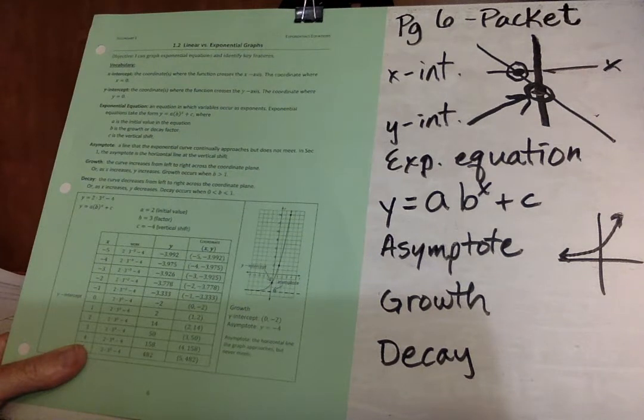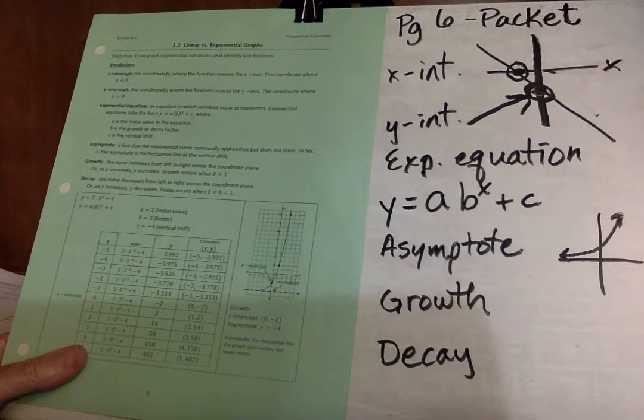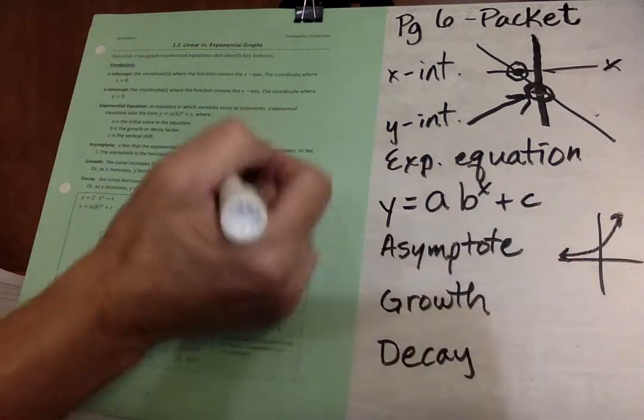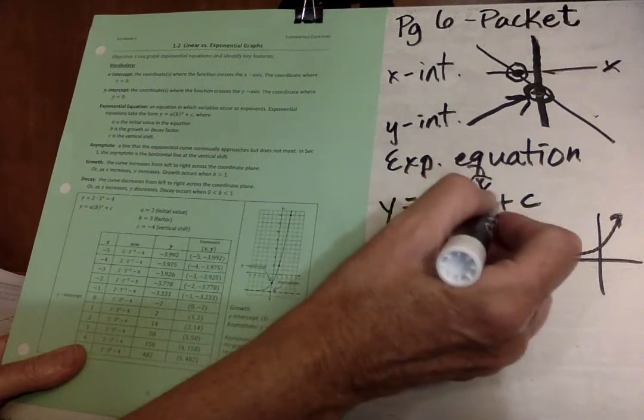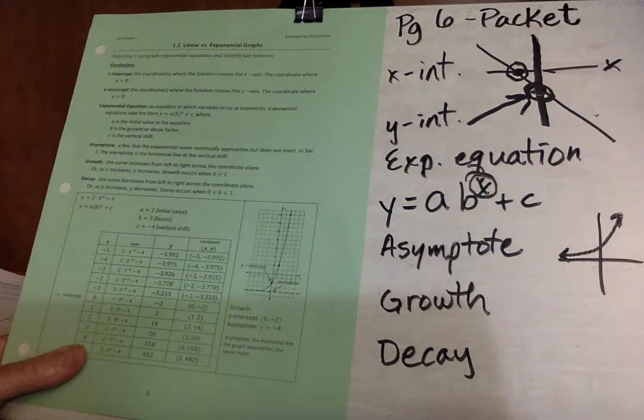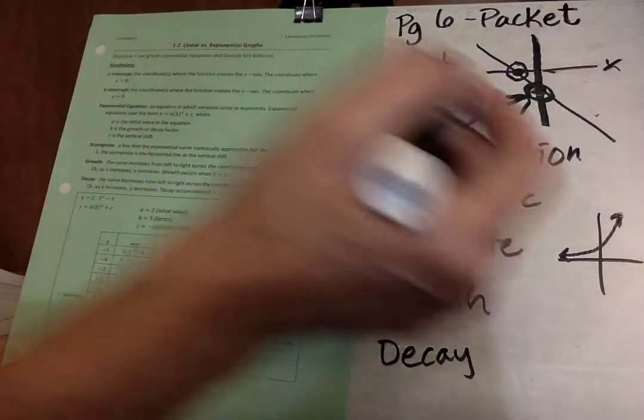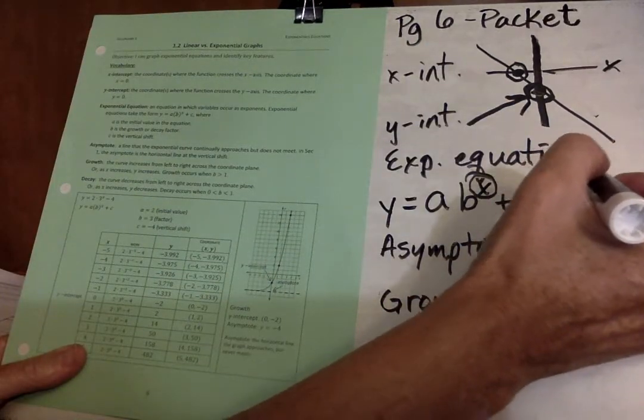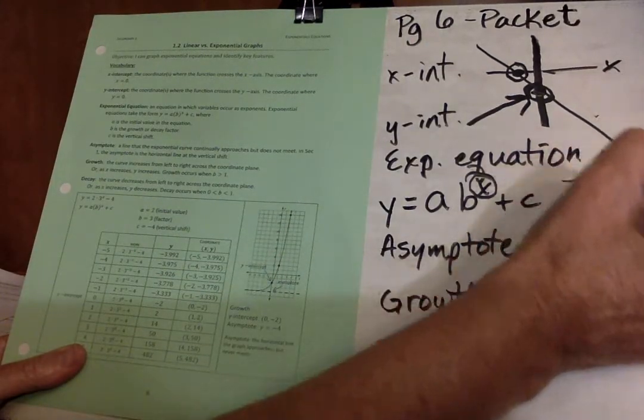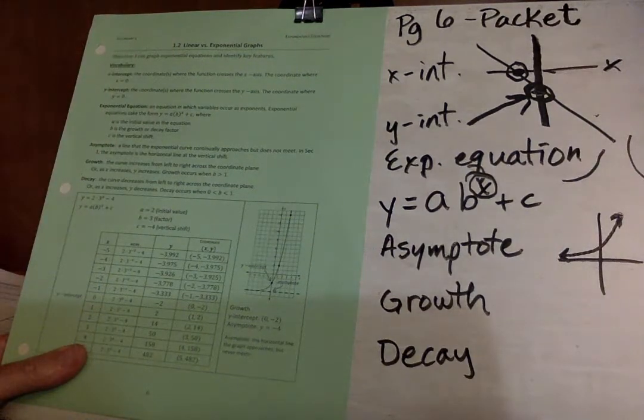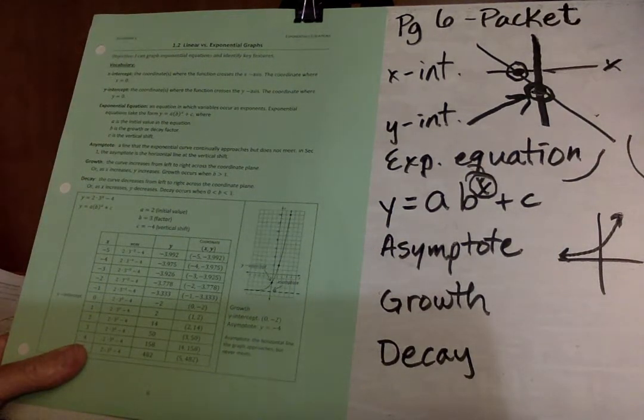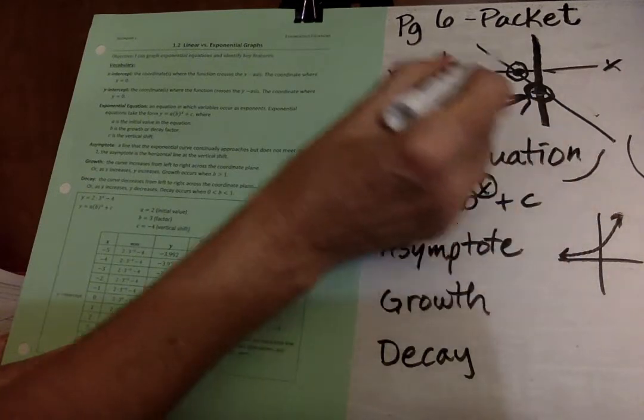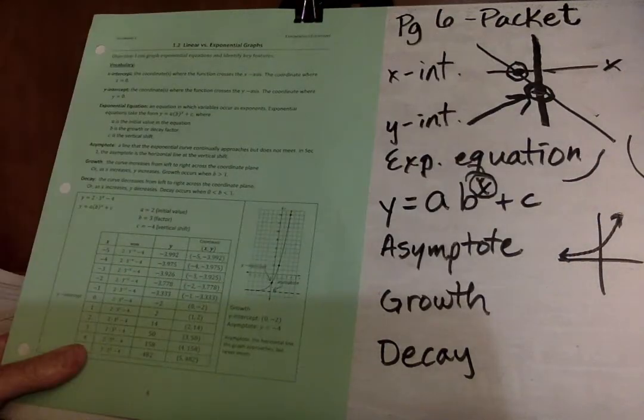Next is an exponential equation, which is an equation in which variables occur as exponents. They're in the form a, b^x plus c. So if you ever see x as an exponent, you know it will be an exponential equation, which means it will either curve up like that or curve down like that. These are exponential equations as opposed to the linear equation, which would be just a straight line. The word line is in the word linear.